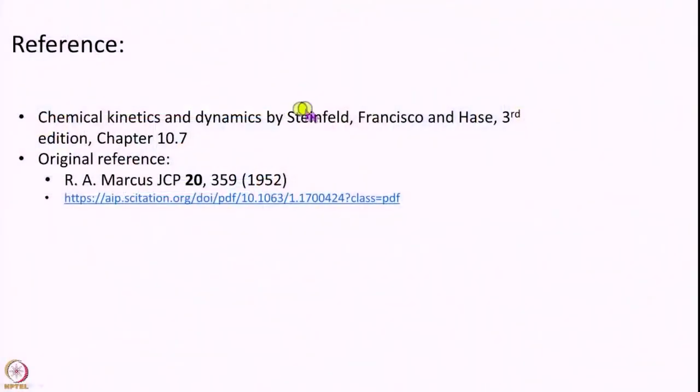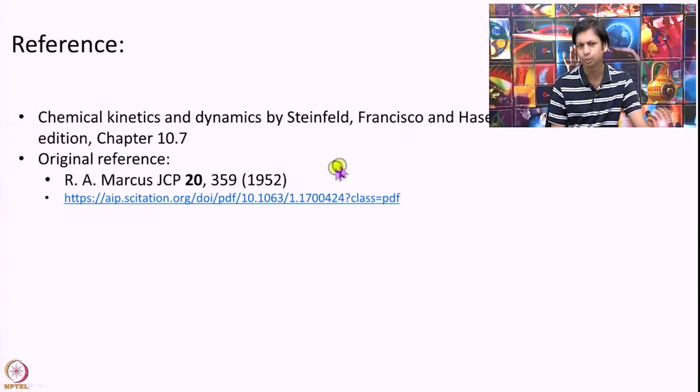The model I am discussing today is called the RRKM model, which stands for Rice, Ramsberger, Kessel, and Marcus. What I am teaching today is covered in Steinfeld, Francisco, and Hayes in chapter 10.7. I have also provided the original reference for those who are extra interested.